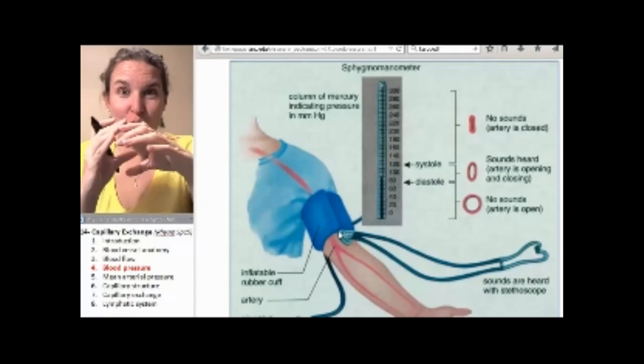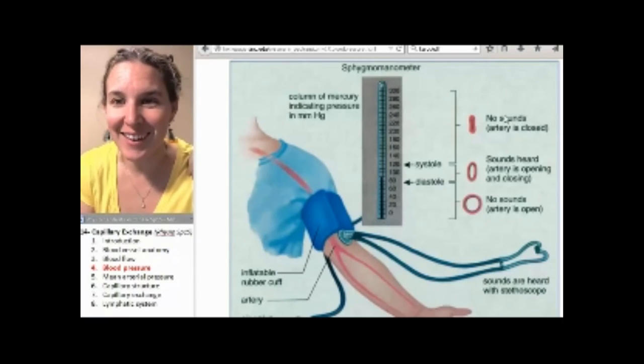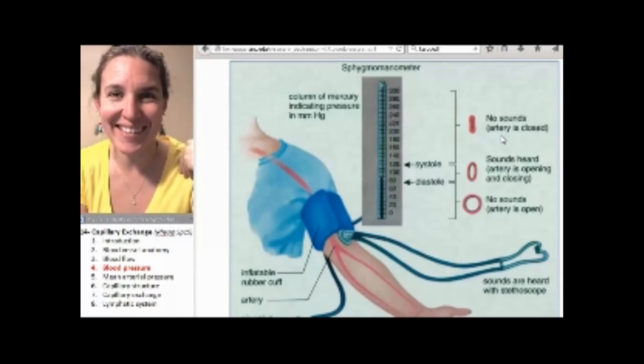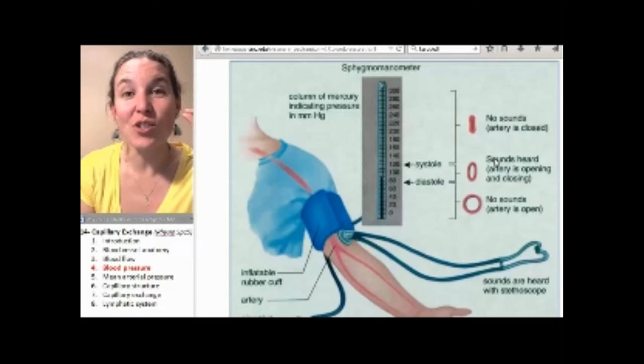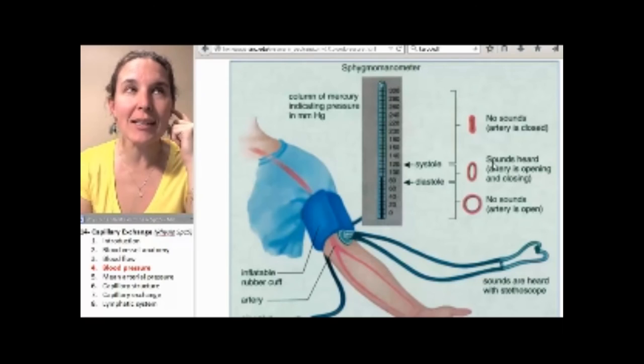Now you pump up your cuff, you close off the blood vessel. Look. There it is. It's totally closed off. The brachial artery pinched off. Don't leave it like that. Then you slowly release the pressure.